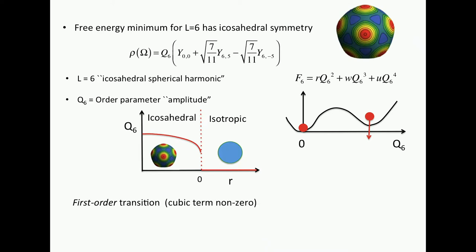It's a first-order transition. And it's a first-order transition because, like Sergey already said, there's a cubic term here. So for L equals six, you have a cubic term. It's non-zero. It's a first-order transition. It means nucleation and growth and hysteresis and all the wonderful things we associate with first-order phase transitions. So this is very simple.